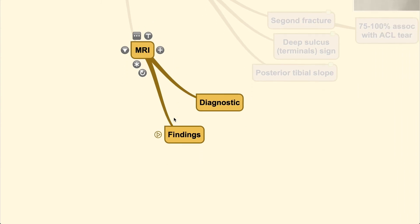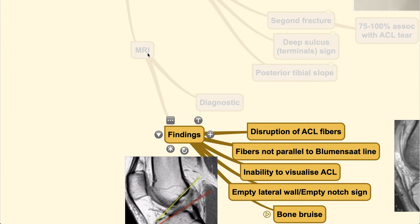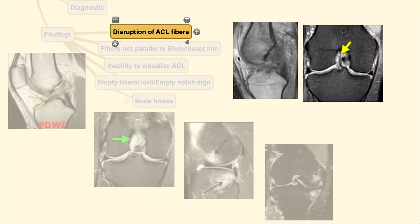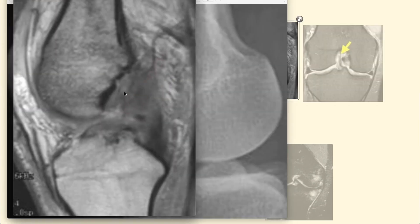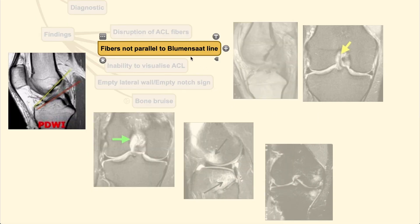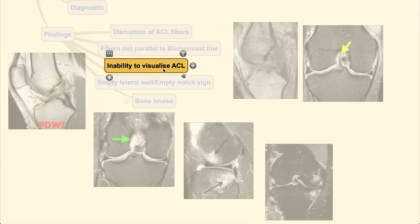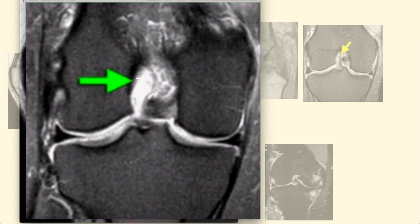The gold standard for determining an ACL tear is MRI, which evaluates soft tissue well. MRI signs include: disruption of the ACL fibers where they should be but are no longer visible; fibers that are not parallel to the Blumensaat line; inability to visualize the ACL at all; and an empty lateral wall or empty notch sign, where there is only fluid signal with no fiber visualization crossing through the notch.